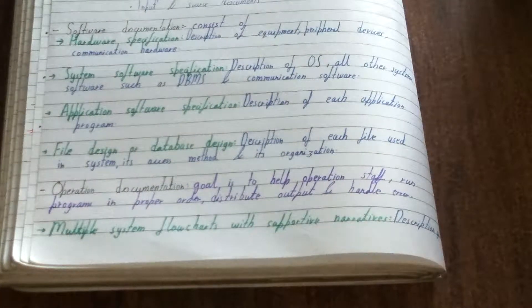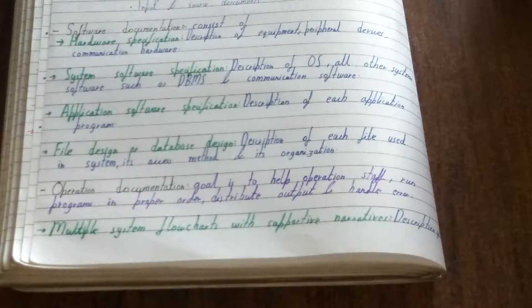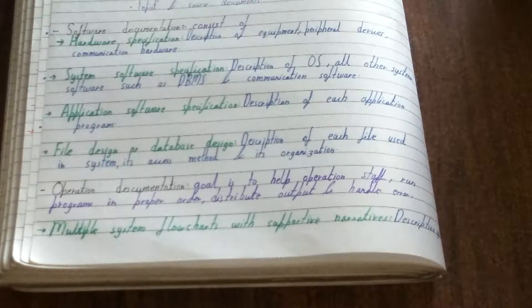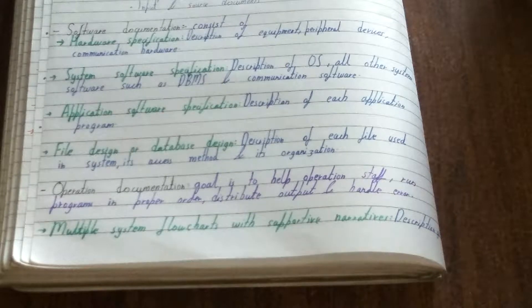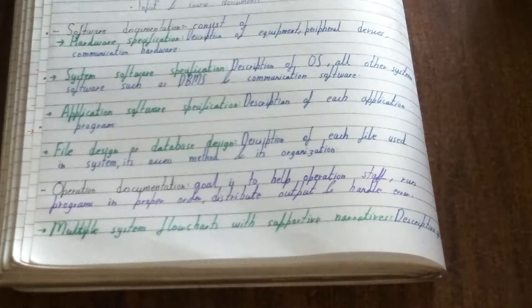Next is operation documents. The goal is to give a better understanding to the operations staff — those who will be handling the software — or the customer handling the system. It covers how to run programs in the proper order, how to distribute output, and what to do if any error occurs. It contains multiple system flowcharts with supportive narratives, so if you get an error you have a flowchart showing what steps to take to remove it. Essentially, it is the user manual which also contains error-correcting techniques.